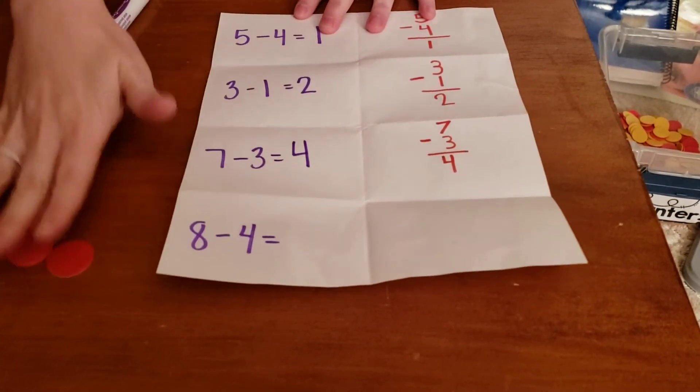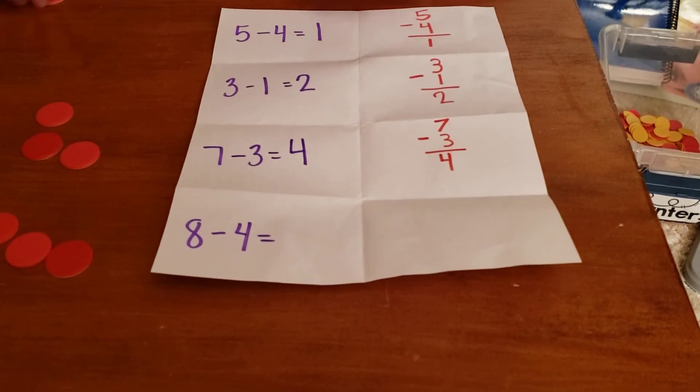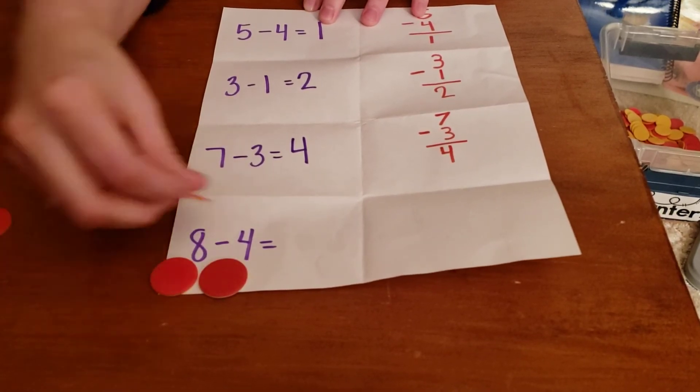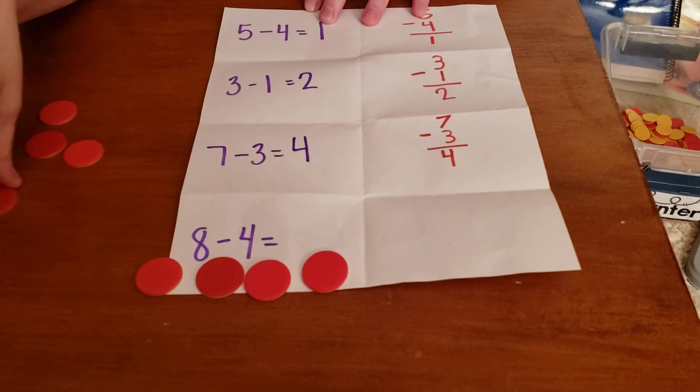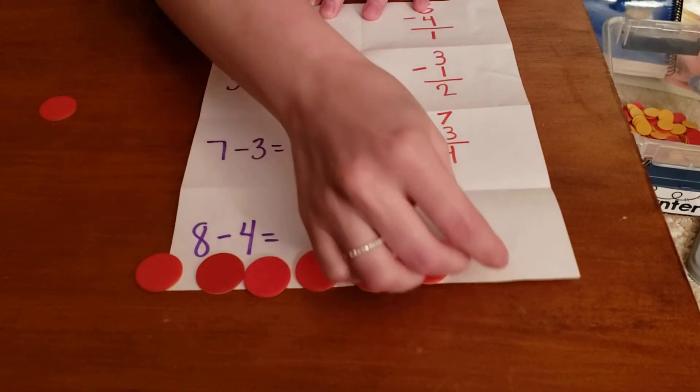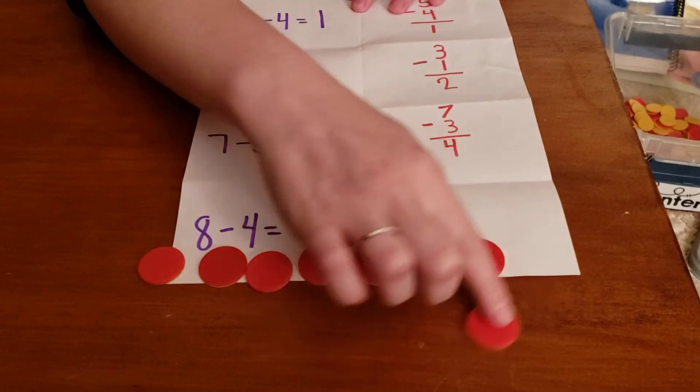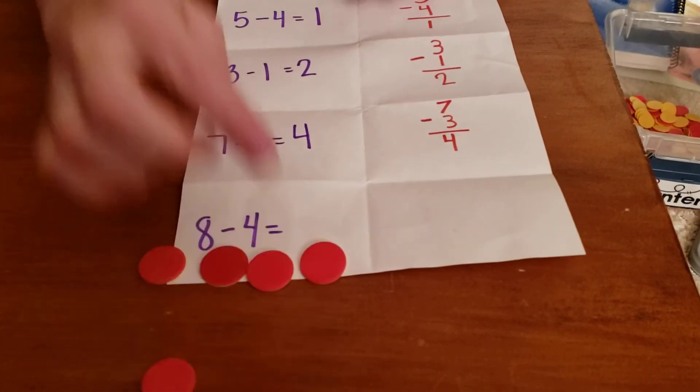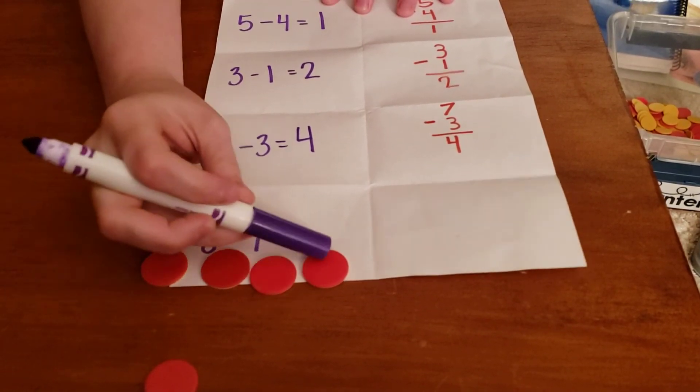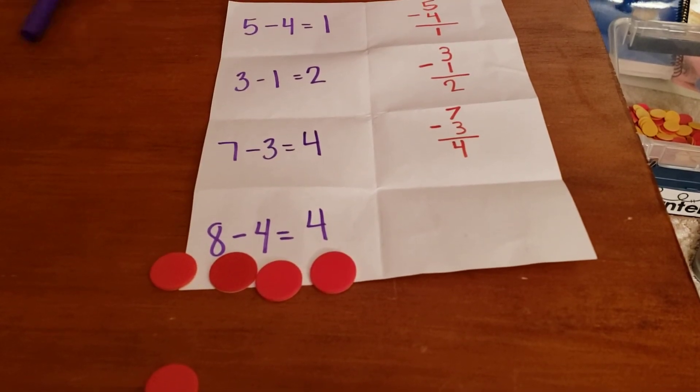Okay, let's do our last one. Eight minus four. One, two, three, four, five, six, seven, eight. Let's take away four. One, two, three, four. How many are left? One, two, three, four. Eight minus four equals four.